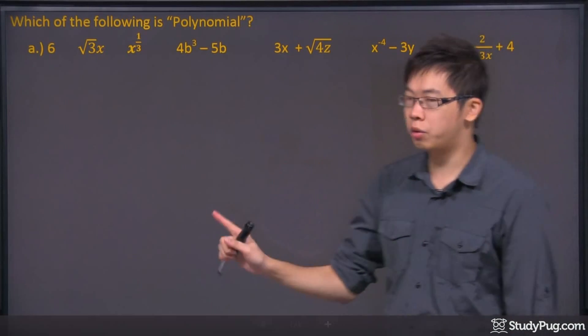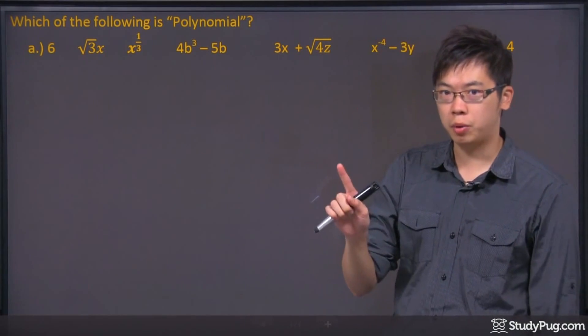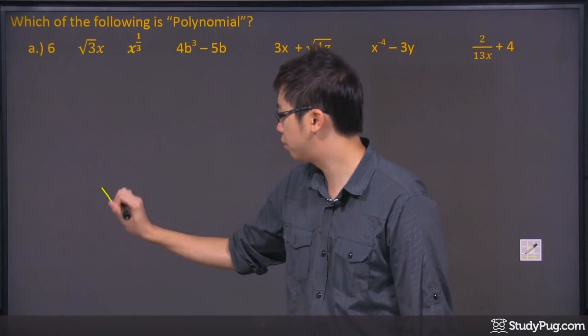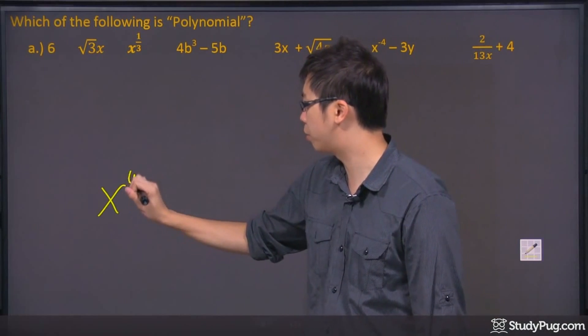So the key idea is this. All you have to do is focus on the variable, like the x, y, z, a, or b, and the exponent of that variable must be a whole number.